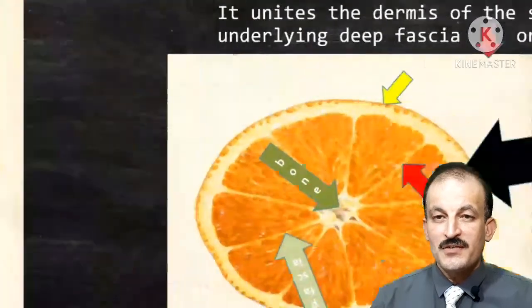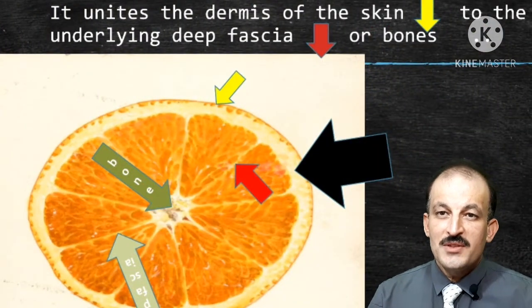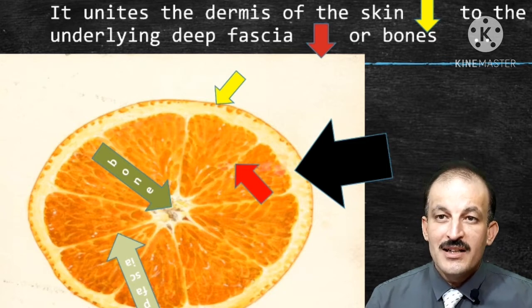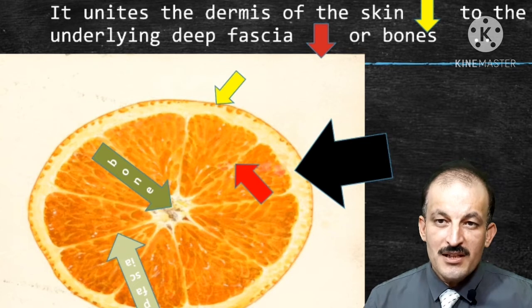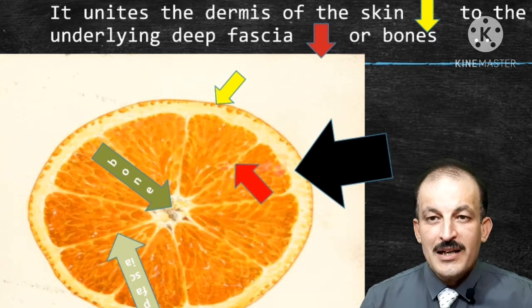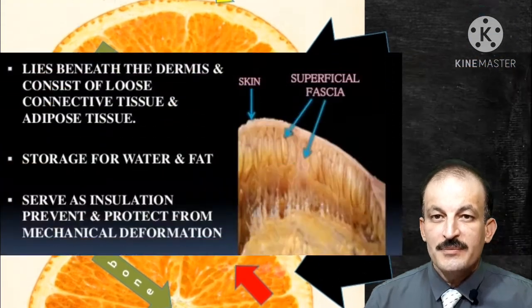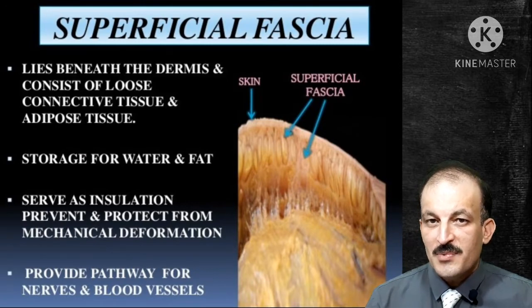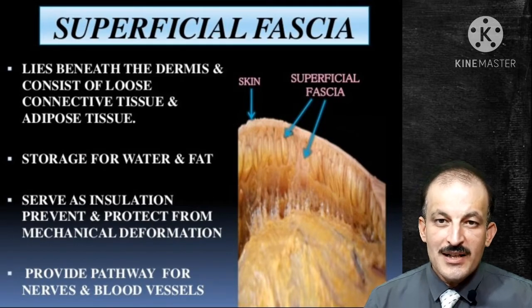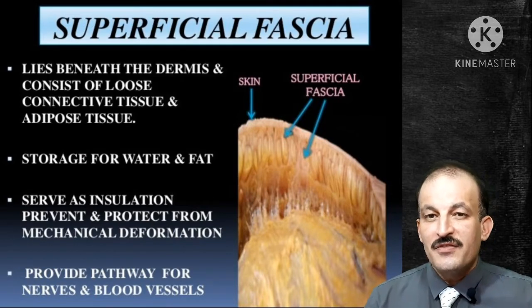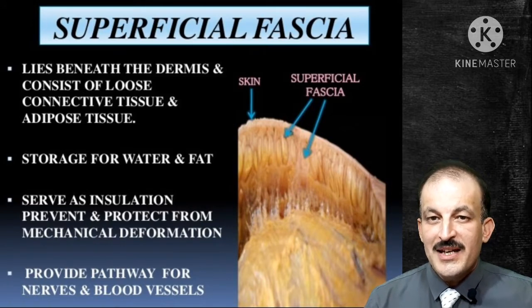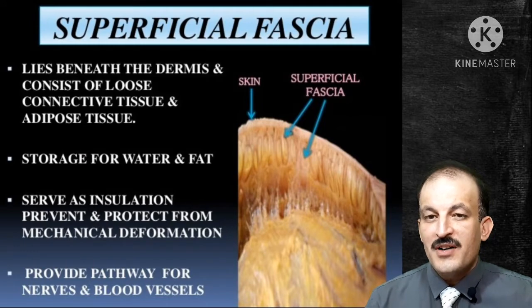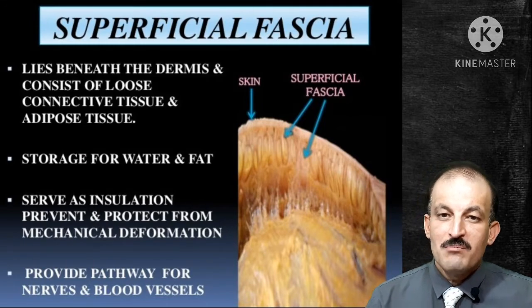These figures represent the superficial and deep fascia. The dermis of the skin, indicated by the yellow pointer, is connected to the underlying deep fascia, indicated by the red pointer, or bones. The black pointer represents the superficial fascia. Superficial fascia lies beneath the dermis and consists of loose connective tissue and adipose tissue. Its functions include storing water and fat, serving as an insulator, protecting from mechanical deformation, and providing a pathway for nerves and blood vessels.